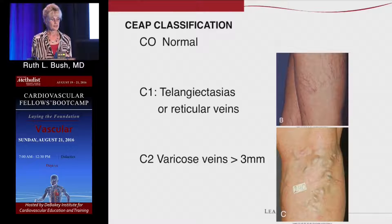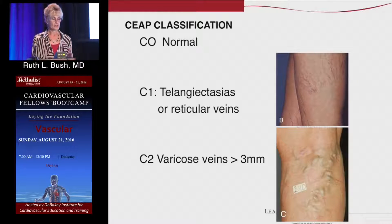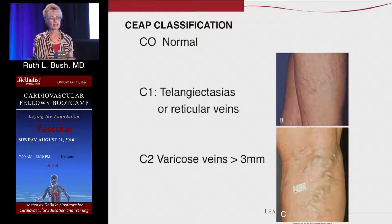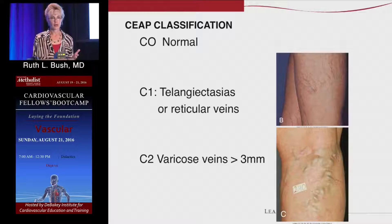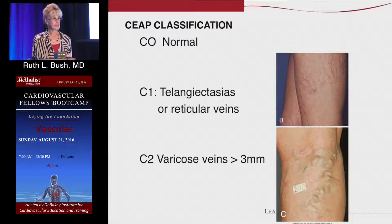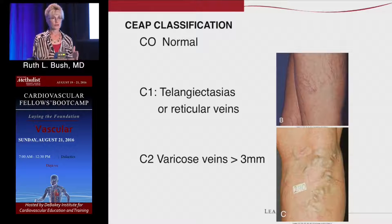The CEAP classification is mainly for us in terms of the clinical, etiology, anatomy, and pathophysiology components. The EANP we don't usually use in terms of grading a patient except for research projects, guidelines, and talking among ourselves. It's mainly the C — the clinical classification — that you will probably have to report to your insurance companies, because they understand those listings.